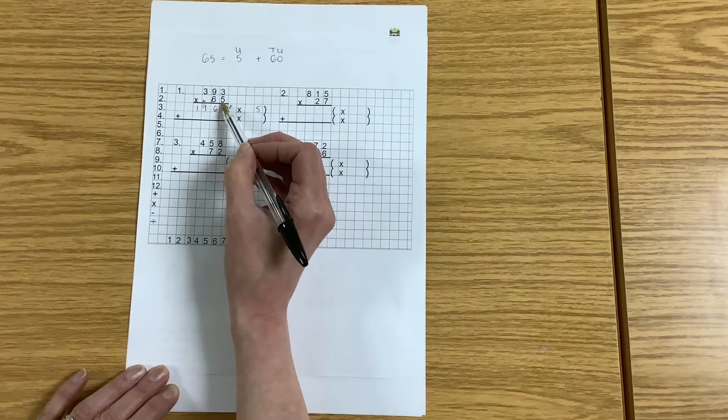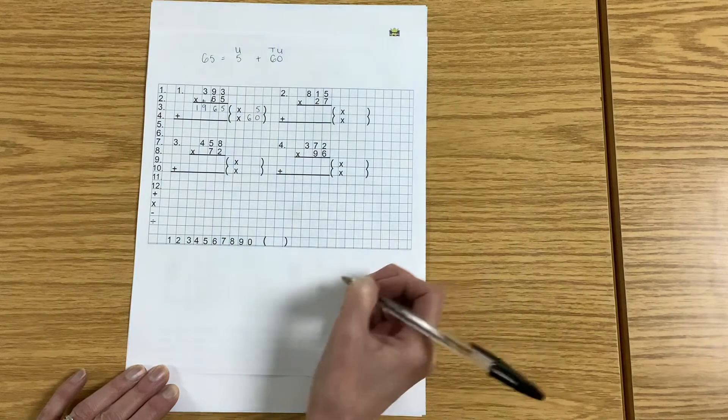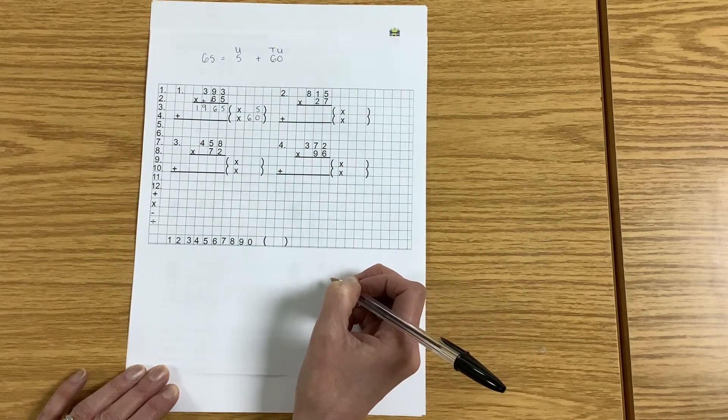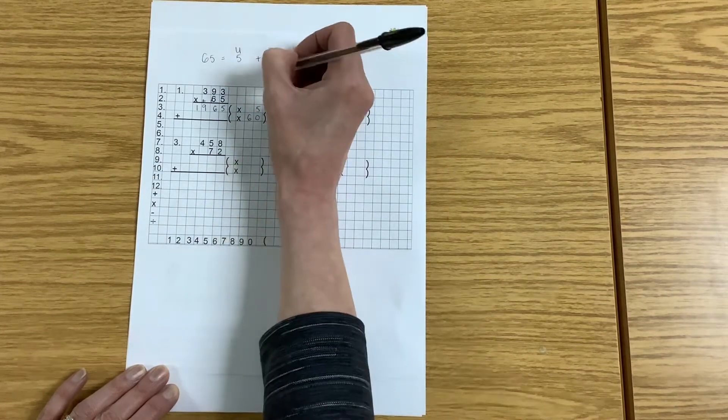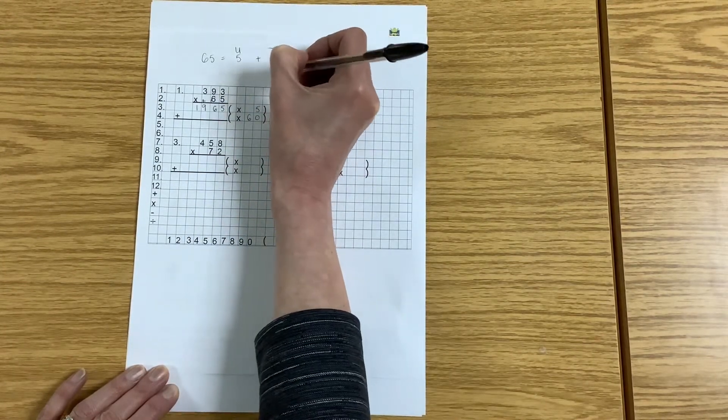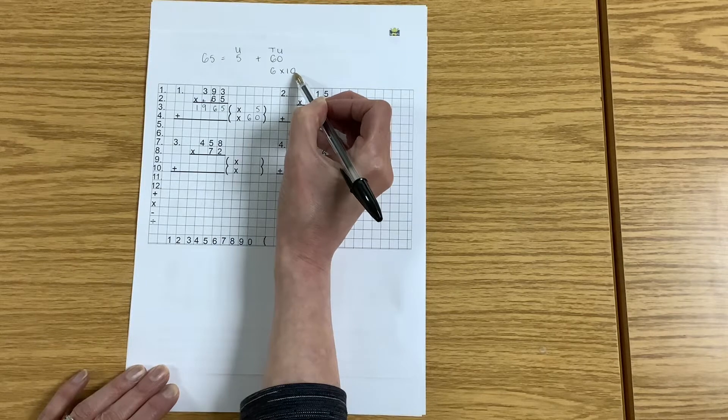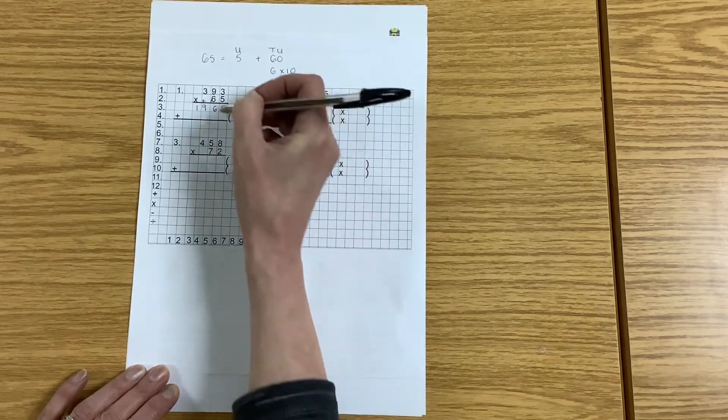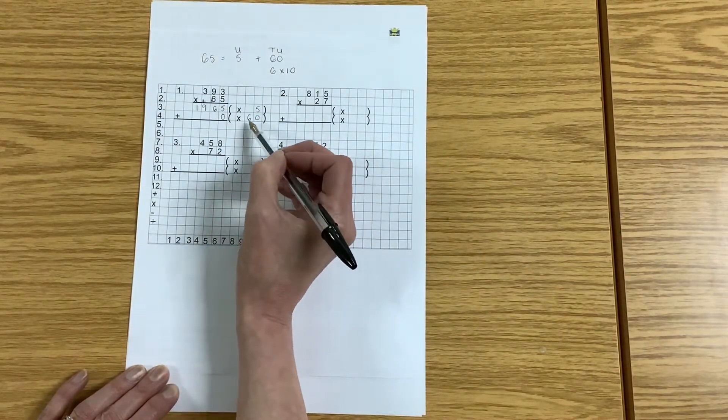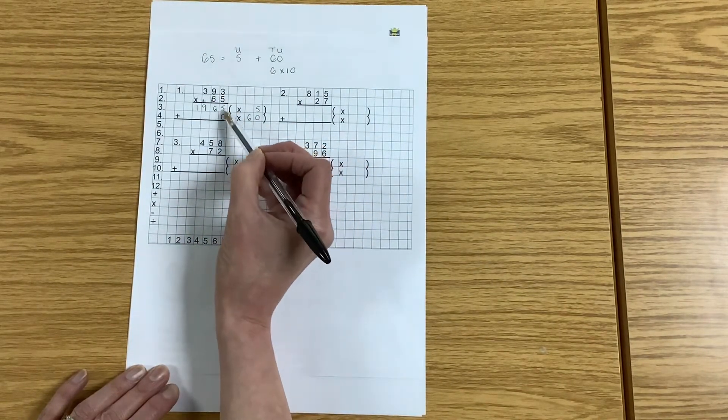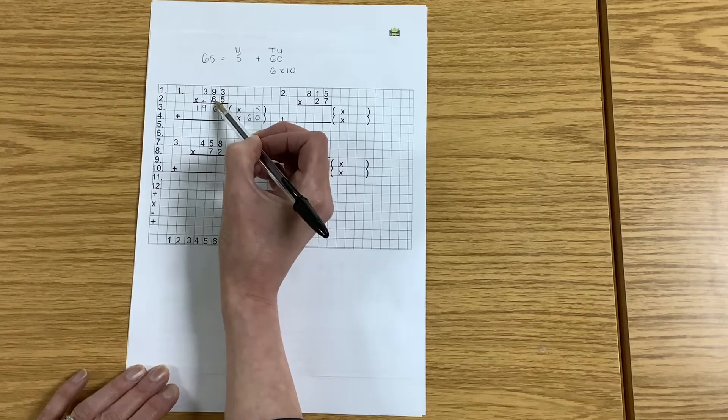Now that I've multiplied by the 5, I need to multiply by the tens number, which is 60. I don't know my 60 times tables, but I do know how to multiply by 6, and 60 is the same as 6 groups of 10. When we multiply by a group of 10, we end up with a 0 in the first box of the sum.